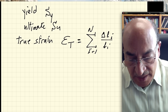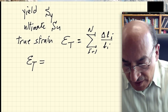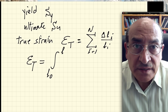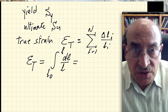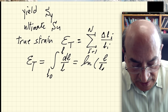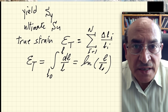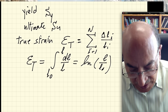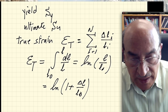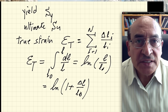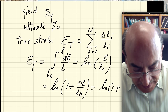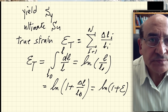True strain ε_t can be defined as an integral: ε_t = ∫ from l₀ to l of dl/l. Evaluating this gives ln(l / l₀), which can be rewritten as ln(1 + Δl/l₀). Since Δl/l₀ is by definition the engineering strain ε, we have: ε_t = ln(1 + ε).